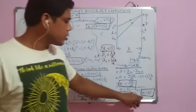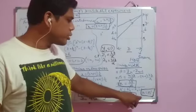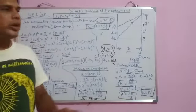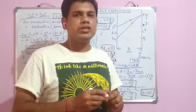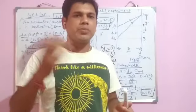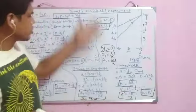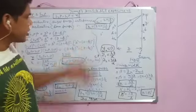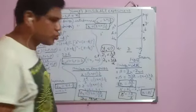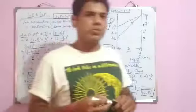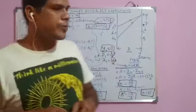So it is proved that β = β'. In Young's Double Slit Experiment, the fringe width of both dark fringes and bright fringes is the same. This is the mathematical expression, and these are the formulas to solve numerical problems. You have to memorize these formulas.